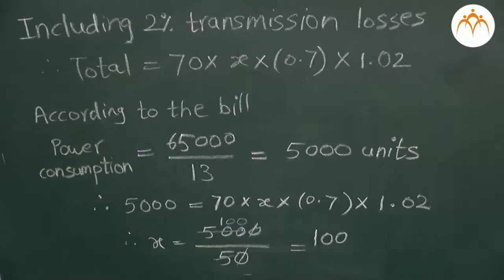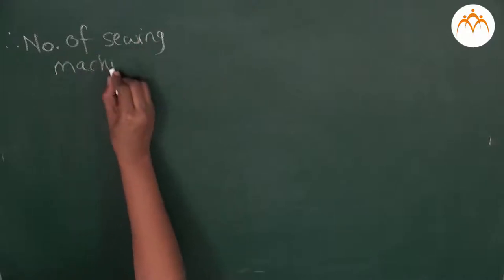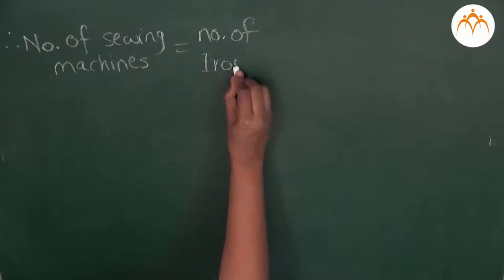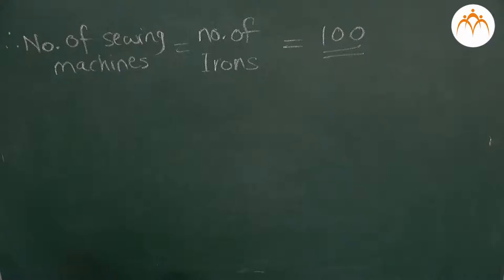So x is the number of sewing machines and also the number of irons in the factory. We get that there are 100 sewing machines and 100 irons in the factory. Now we want to calculate the number of apparels made during that week. Revisiting the question: one apparel takes 15 minutes to be made on one pair of sewing machine and iron.